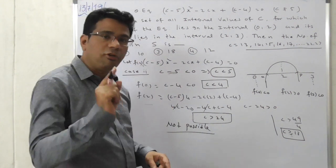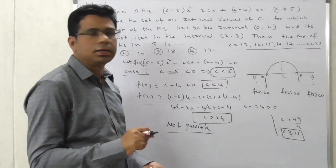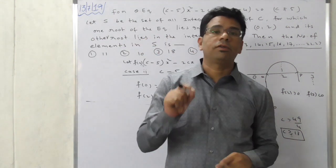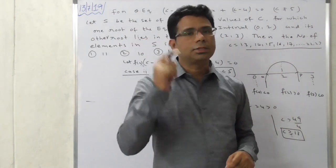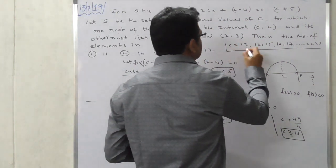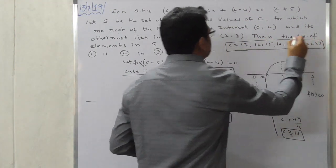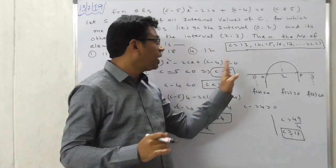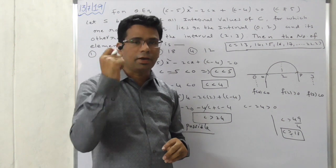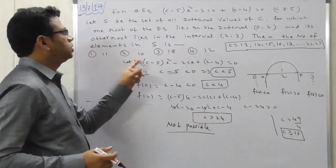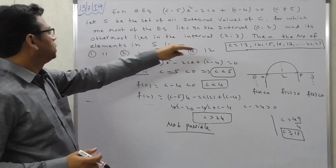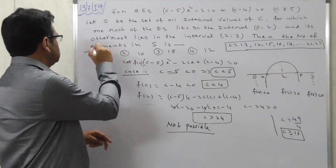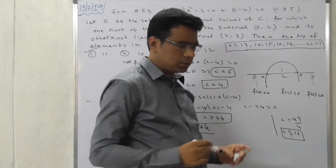Therefore, we only consider Case 1, where the coefficient of x² is greater than 0. The valid integer values of c are 13, 14, 15, 16, up to 23. The total number of elements in S is 11, which is the final answer.